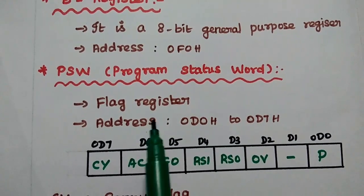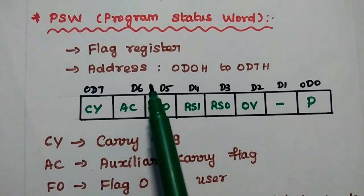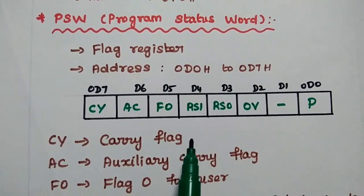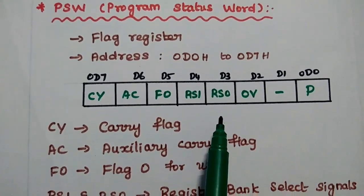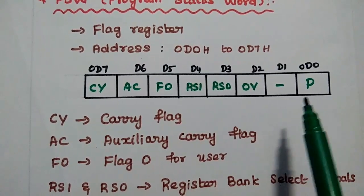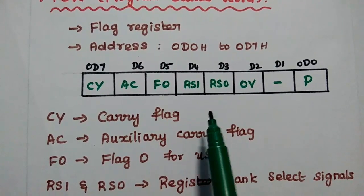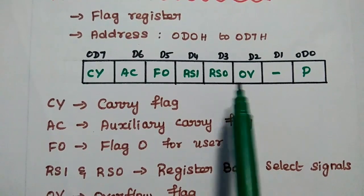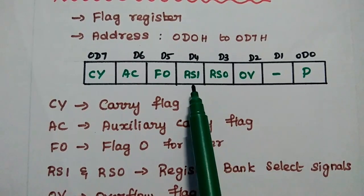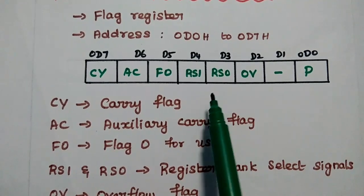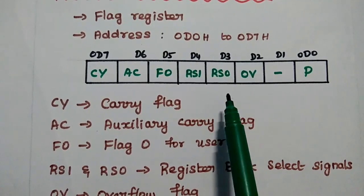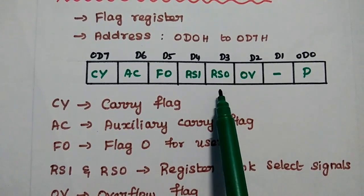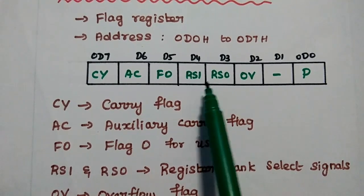PSW is also called the flag register. Its address is 0D0H to 0D7H. This is the bit representation for the PSW register. There are 5 important flags used in AT51: parity flag, overflow flag, RS1 and RS0. These two bits are used to select the register bank of AT51. Since AT51 has 4 register banks, we can select the register bank based on the combination of these two bits.